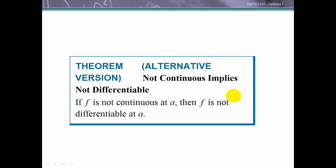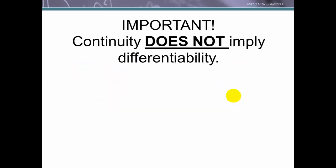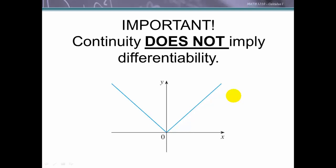A caution: students sometimes misuse this theorem and think it implies something it does not. Continuity does not imply differentiability. Differentiability implies continuity, but you cannot reverse that implication. The absolute value function is a perfect example: we just showed it is not differentiable at x equals 0, yet it is continuous there because the function value exists and the limit as x approaches 0 from both sides equals 0, which equals the function value at x equals 0.